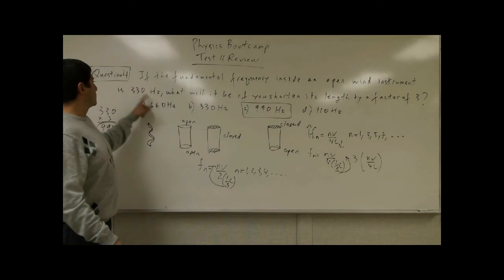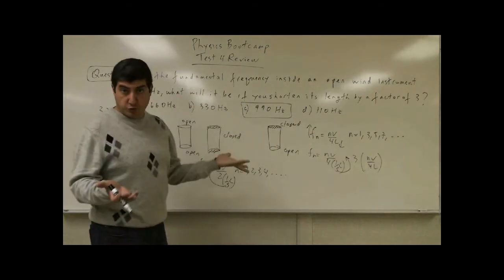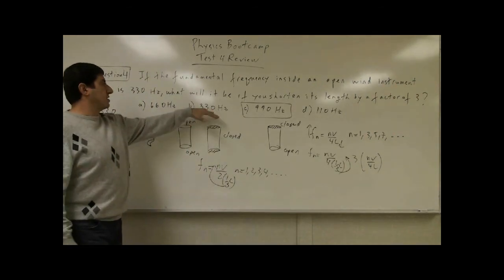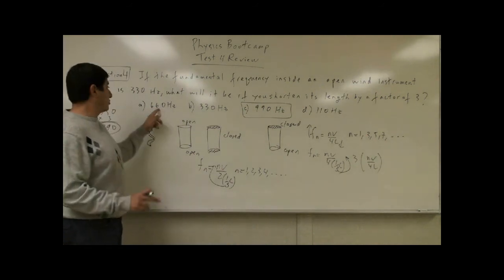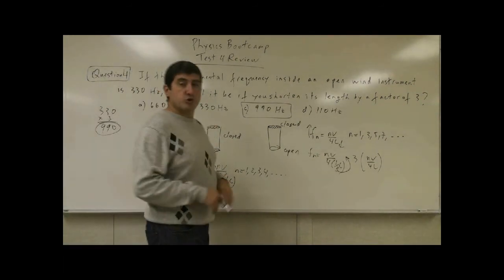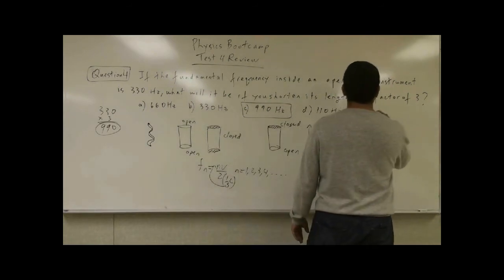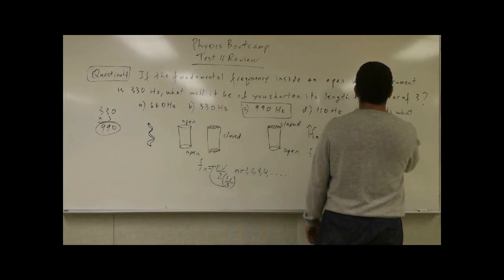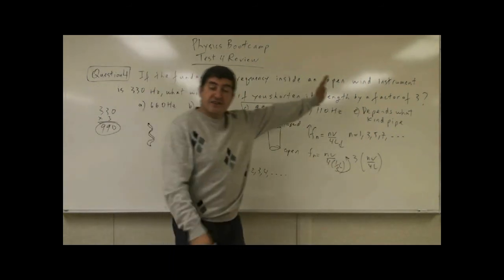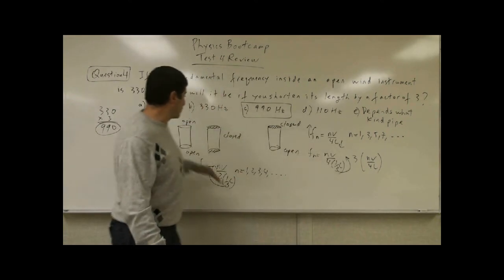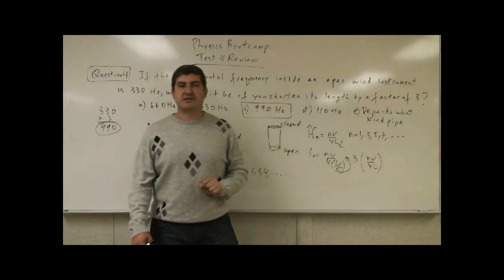The pitfall here is that some people might think decreasing the length decreases the fundamental frequency, and say 110 Hz. Others might think the frequency stays the same, or that it goes up by only a factor of two, giving 660 Hz. Some might even think the answer depends on what kind of pipe it is. But regardless of the type of wind instrument, the answer is still 990 Hz — it doesn't matter what kind of pipe it is.